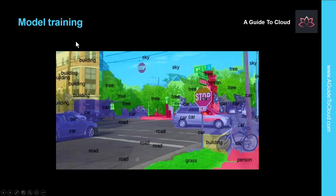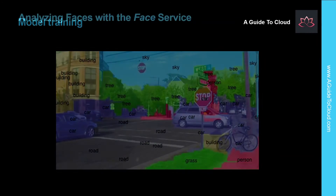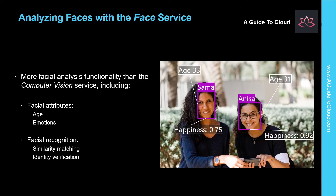So what is model training? To train a custom vision model, you must upload images to your training resource and label them with the appropriate class labels or object bounding boxes. Then you must train the model and evaluate the training results. You can perform these tasks in the custom vision portal, or if you have the necessary coding experience, you can use one of the custom vision service programming language SDKs.